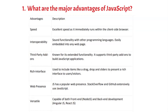4. Rich interface — used to include items like drag-and-drop and sliders to present a rich interface to users and visitors. 5. Web presence — JS has a popular web presence; Stack Overflow and GitHub extensively use JavaScript. 6. Versatile — capable of both front-end and backend development, including AngularJS and ReactJS.